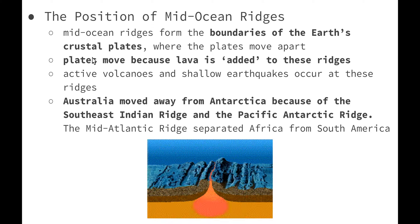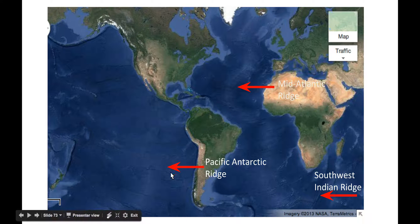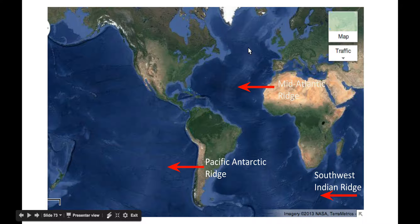The next evidence is the position of mid-ocean ridges. Mid-ocean ridges form the boundaries of the Earth's crustal plates where the plates move apart. The crust moves because lava — hot molten rock beneath the Earth's crust — is added to these ridges. Active volcanoes and shallow earthquakes also occur at these ridges. Australia moved away from Antarctica because of the South East Indian Ridge and the Pacific Antarctic Ridge. The Mid-Atlantic Ridge caused the separation between Africa and South America. We can also see right down the middle of the Atlantic Ocean the outline of the Mid-Atlantic Ridge, running along the boundary between two major tectonic plates.